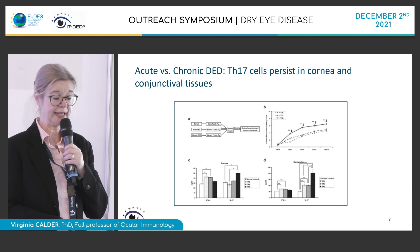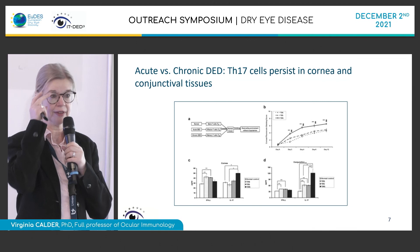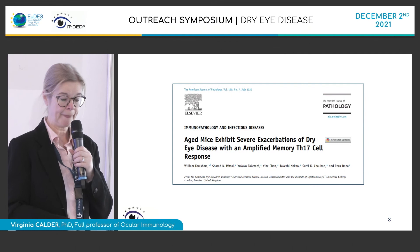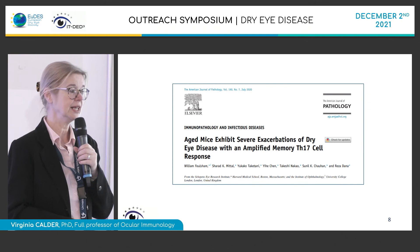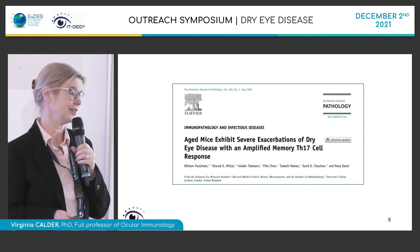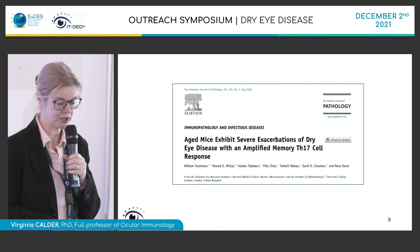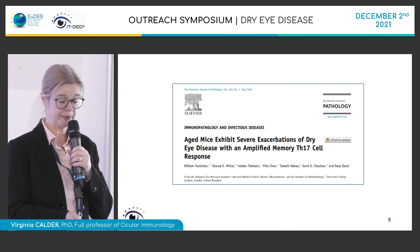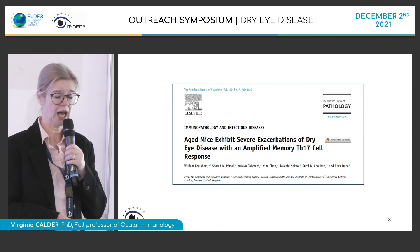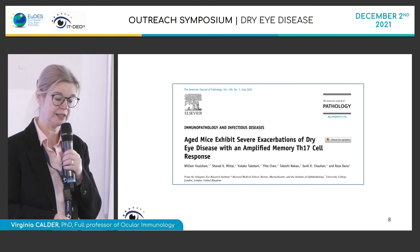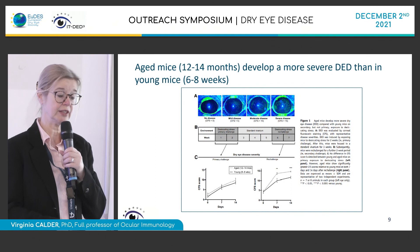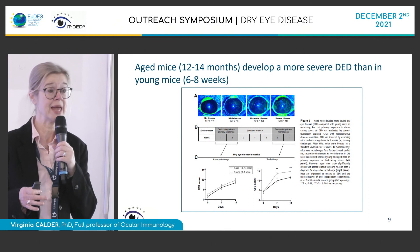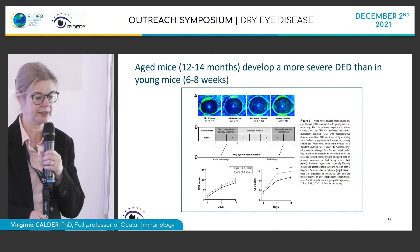Looking in the tissues, it was possible to see these TH17 cells in both corneal and conjunctival tissues — they clearly persist and maintain inflammation long term. More recently, a PhD student who worked with Reza Dana in Boston looked at these TH17 cells further. Using aged mice, they observed exacerbations — worsening of dry eye disease — that coincided with increases in memory TH17 cells. So now we have both effector TH17 cells and memory TH17 cells: our first subset of a subset.